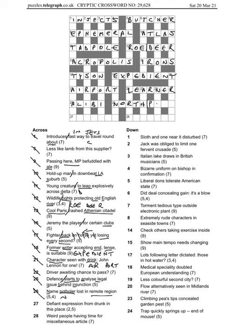27 across: defiant expression from drunk in this place. So a drunk could be an old sot, and this place is here, and then we just sort of divvy it up in a different way and we get SO THERE for a defiant expression. And the final one across, 28 across: weird people could be odd men having time, so T stuck on the end. A miscellaneous article would be an ODDMENT.